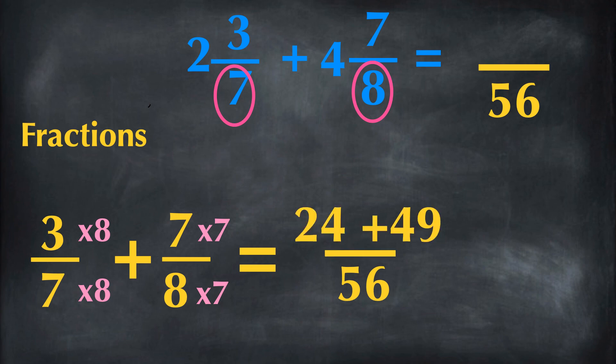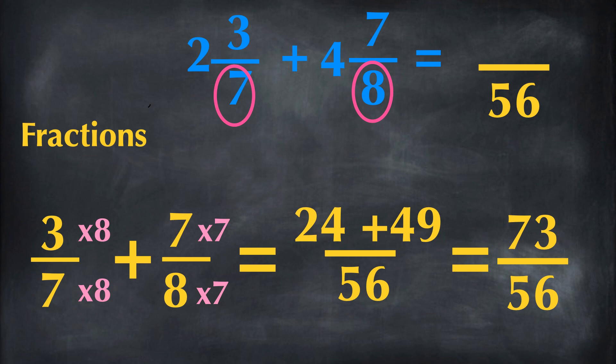And 7 times 7 is 49. So 24 plus 49 is 73. The answer is 73 over 56.